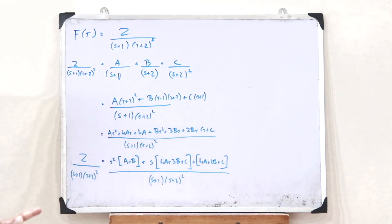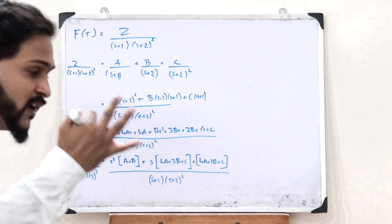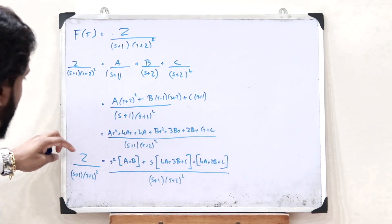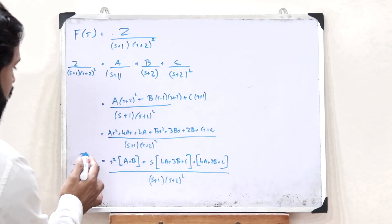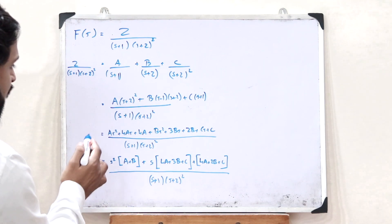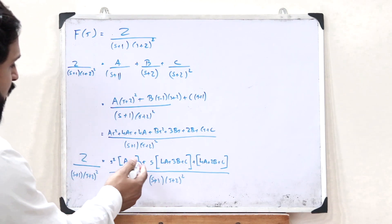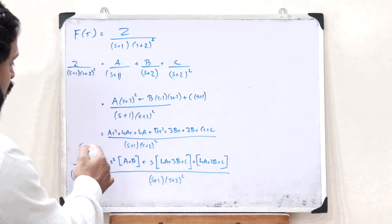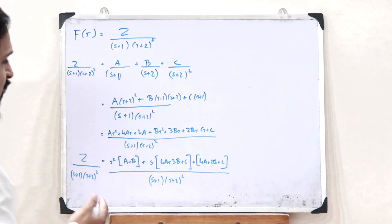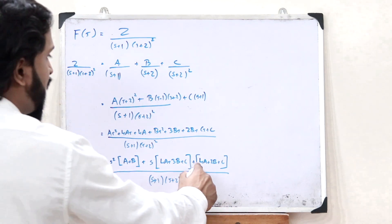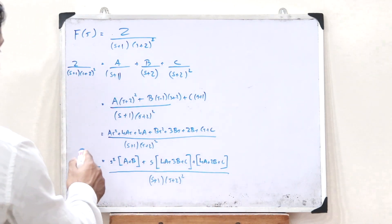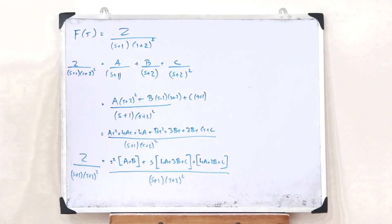We now have three equations. First, equate the s² components on both sides. Then equate the s components on both sides. Finally, equate the constants on both sides.